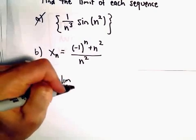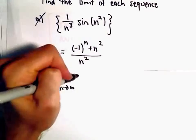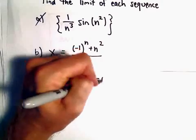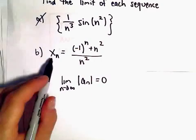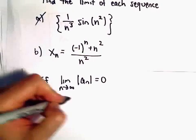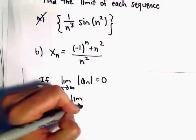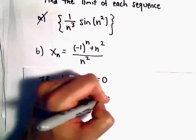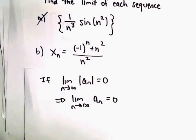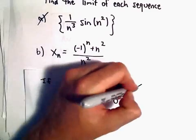Remember, that says if the limit of the absolute value of a_n equals 0, or in this case, x_n, if that happens, that tells us that the sequence without the absolute value also equals 0. So we're going to use this result.